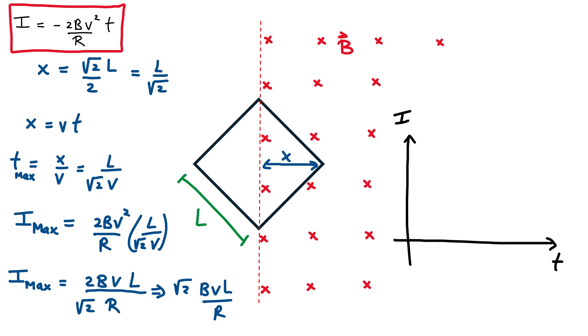When this loop is entering that magnetic field region, the current increases linearly right up until it reaches the midpoint, which is the maximum current. The second part: let's look at what happens when the loop is leaving. You might guess it is a symmetric function — and you'd be correct — but I do want to calculate it. It's a little different because now the area is getting smaller as time progresses; the rate at which the area changes is decreasing.